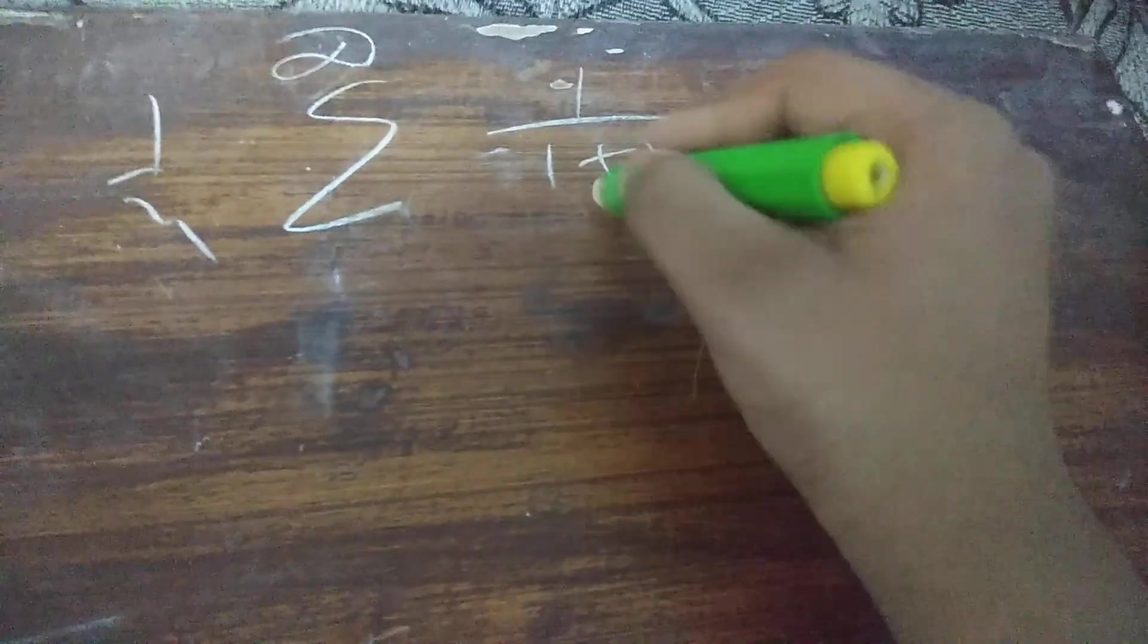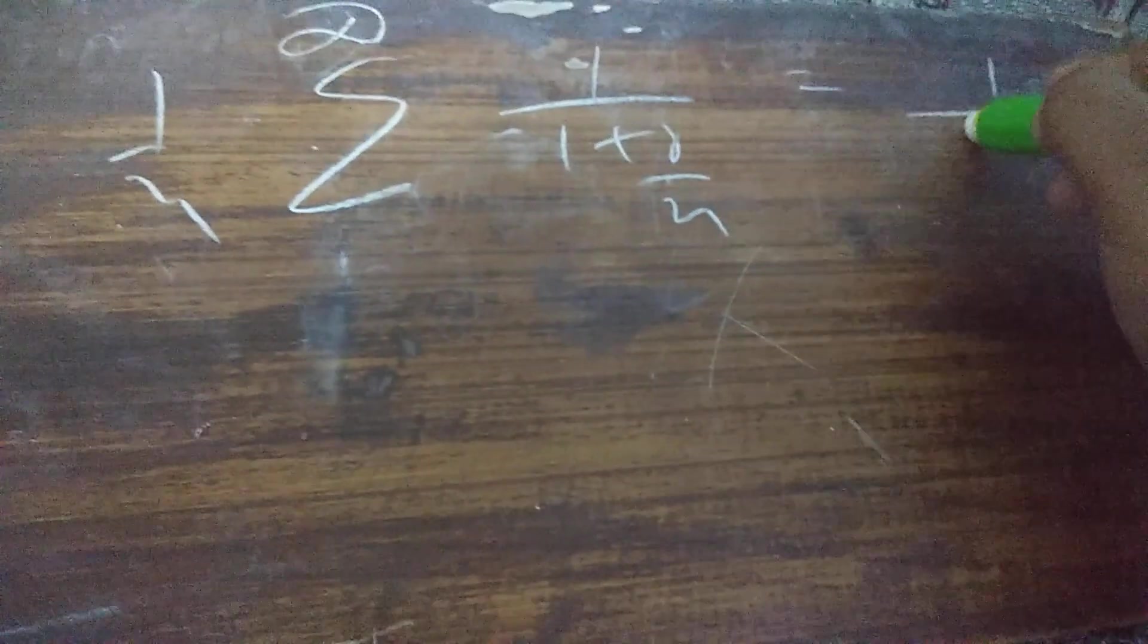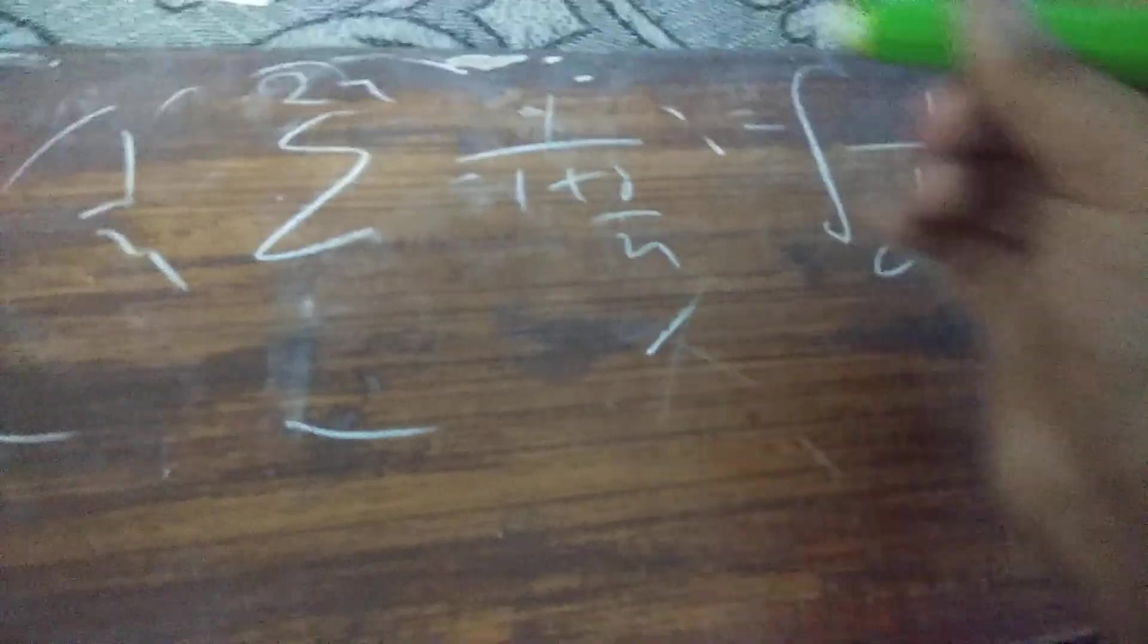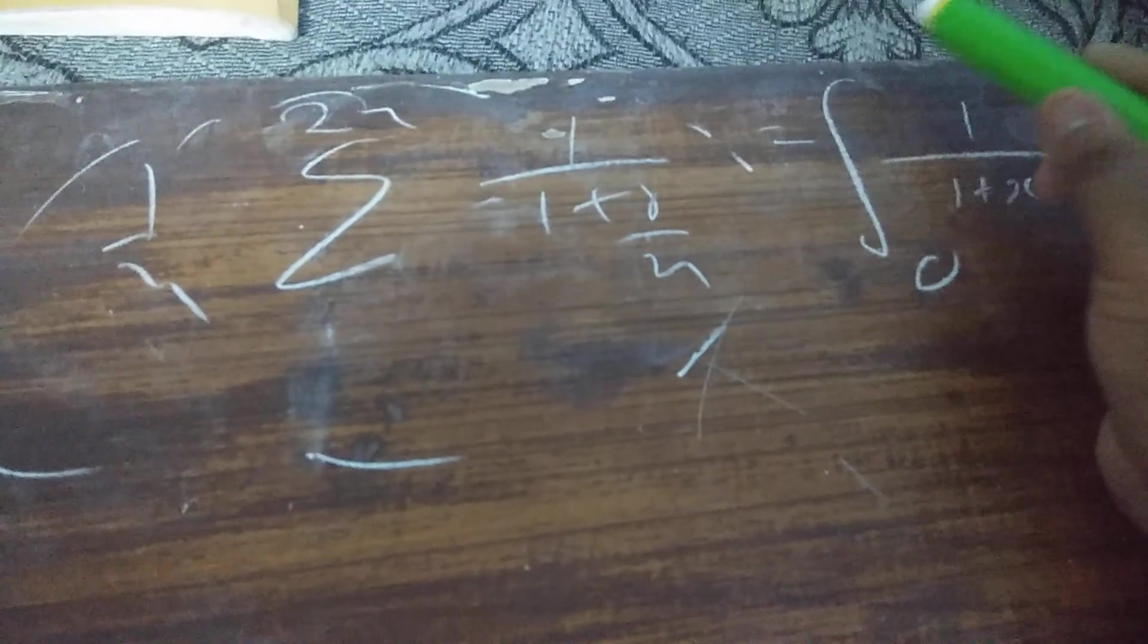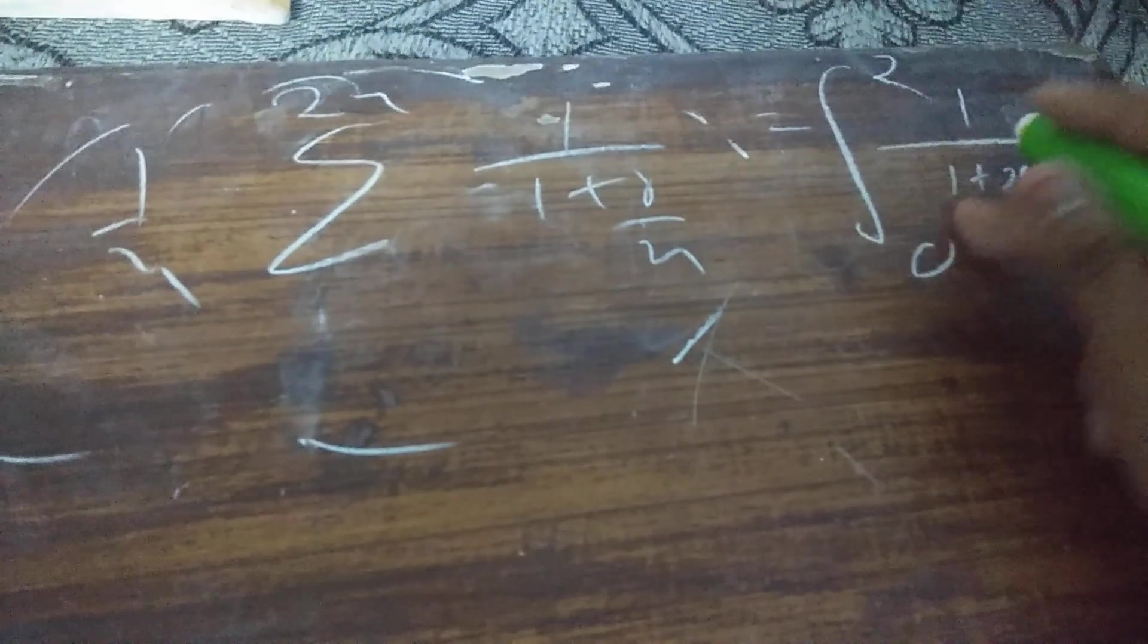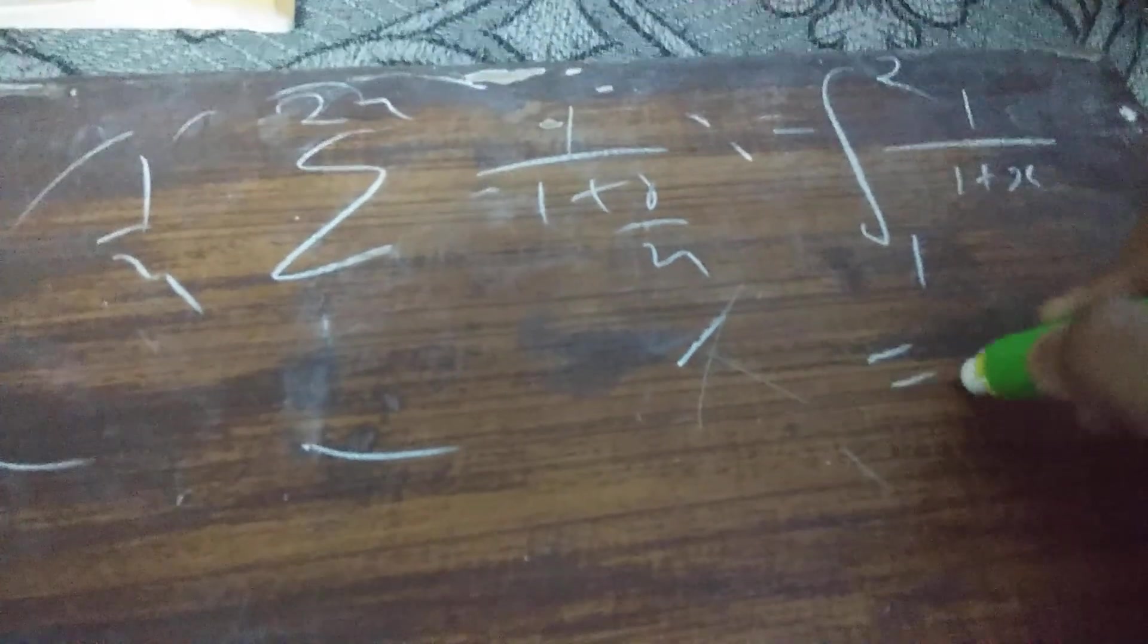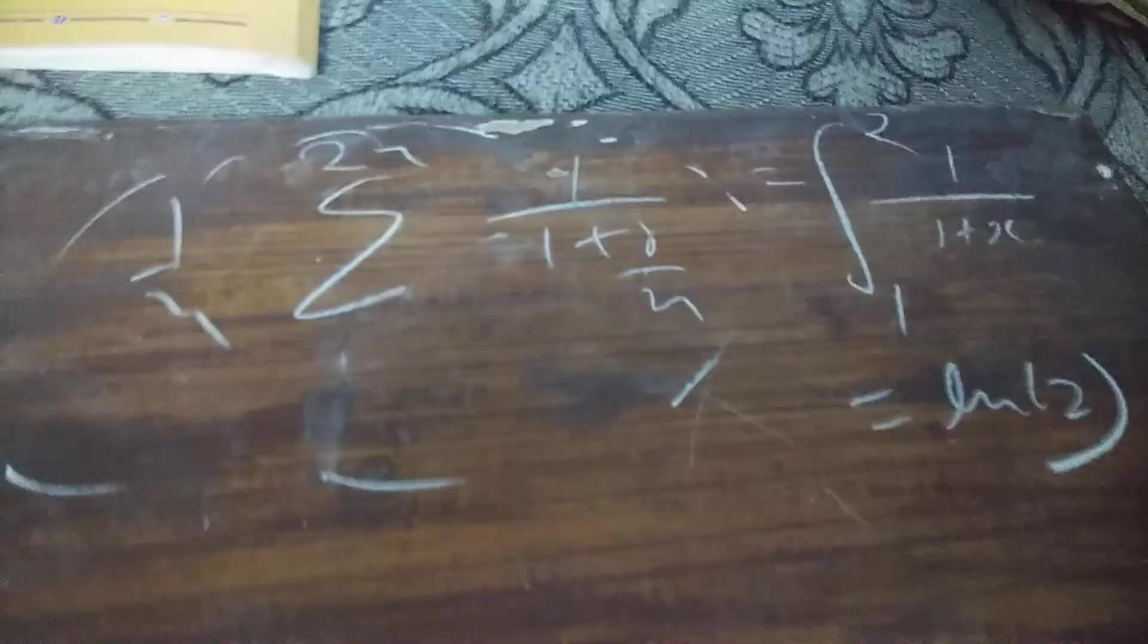One more great way to prove that limit is by limit of sum. The sum 1/(n+r), we take 1/n common to get 1/(1 + r/n), which by limit of sum becomes the integral from 1 to 2 of 1/x dx, which equals ln(2).